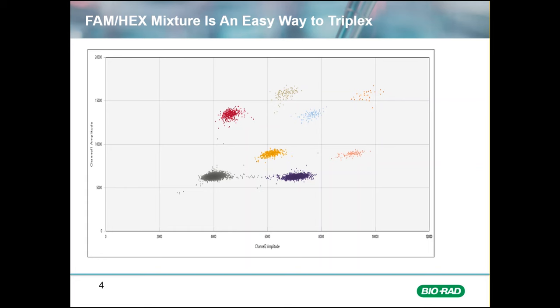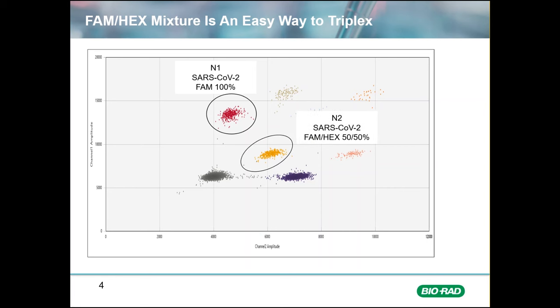The EUA was granted in May of 2020. Along the y-axis showing FAM fluorescence is the 100% FAM probe positive cluster for the N1 SARS-CoV-2 target. Just next to this, at an angle halfway between the y-axis for FAM and the x-axis for HEX fluorescence, is the second positive cluster detecting the N2 SARS-CoV-2 target. This is created by adding 50% FAM and 50% HEX probe.